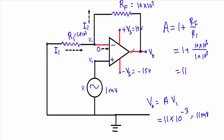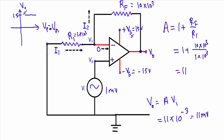Drawing the transfer characteristics of this op-amp: on the x-axis is VP minus Vn, and on the y-axis is the output voltage. The positive saturation voltage is plus 15V and negative saturation voltage is minus 15V, with a linear region in between. The output voltage of 11 millivolts falls within this linear region, confirming the amplifier is operating in the linear region.